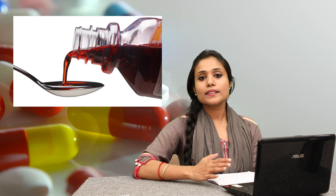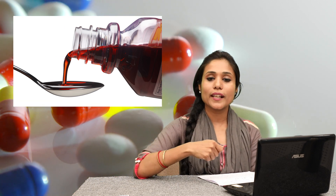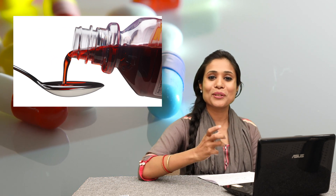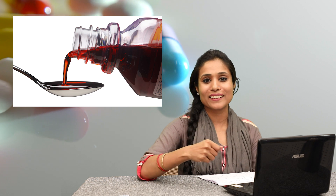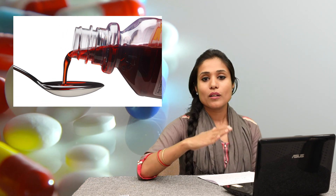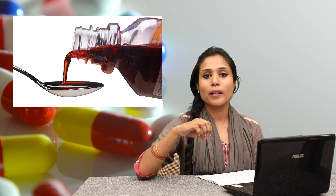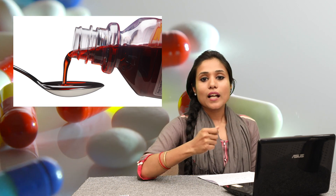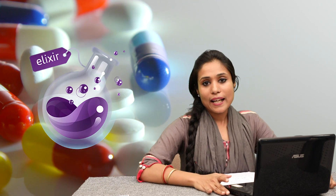Syrups are liquid substances. In layman's language, syrup is like Chashni — when we make rasgula, we make chashni, which is a form of syrup. The active drug substance is dissolved in it. Specifically, syrup is used to give to children because it is not bitter and is easy for the child to take.